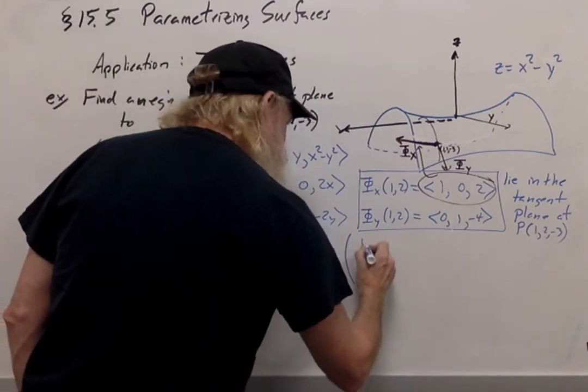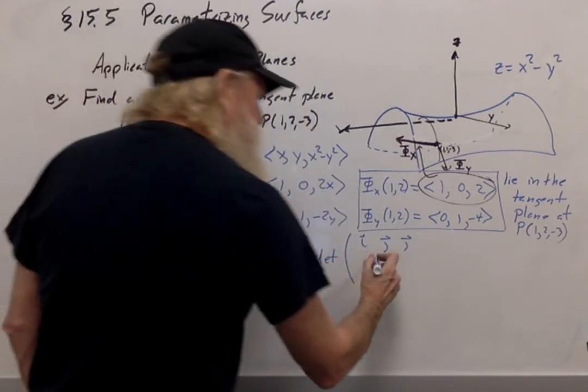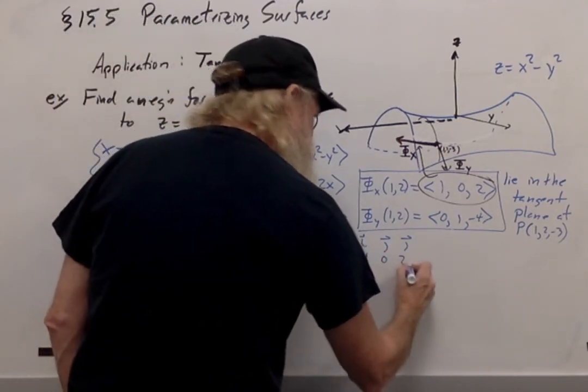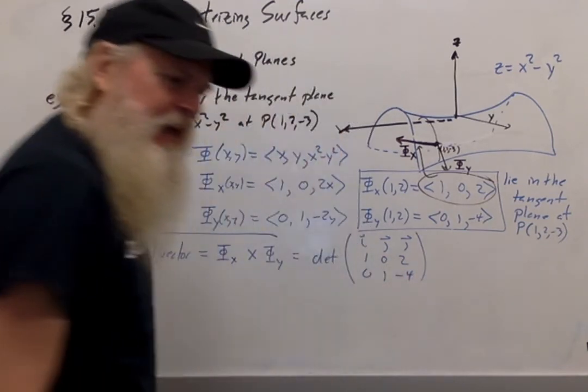So I'm taking the determinant of i, j, k, d phi dx which is (1, 0, 2), and d phi dy which is (0, 1, -4).